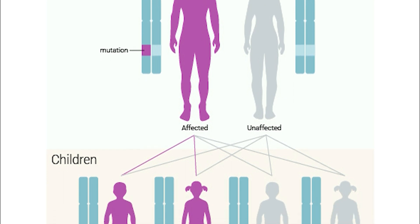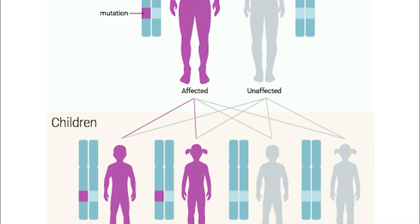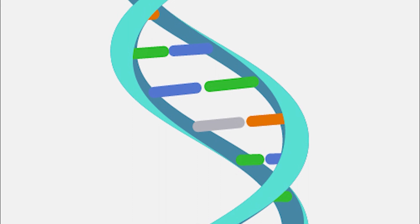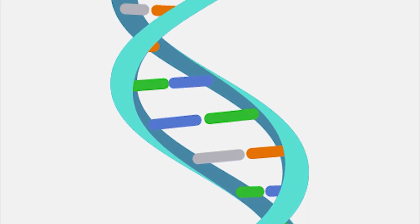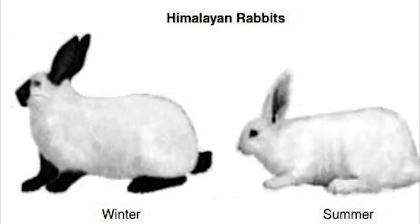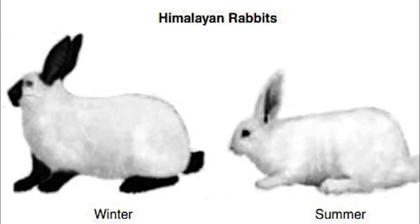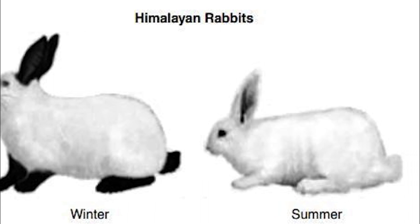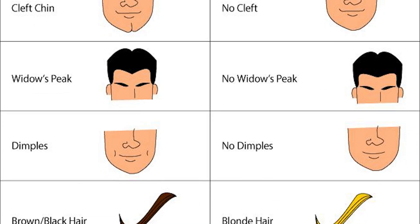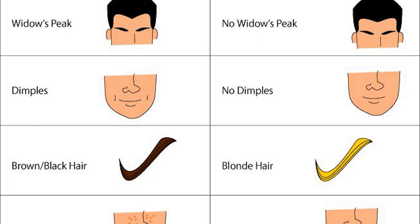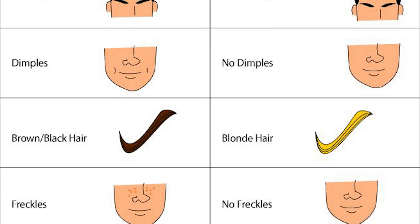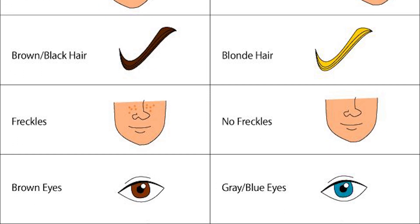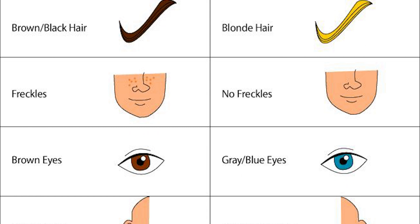It is important to note that inheritance is not always straightforward. Many traits are influenced by multiple genes, as well as environmental factors, leading to complex patterns of inheritance. Additionally, genetic mutations can occur, leading to new traits or disorders that may not have been present in previous generations.